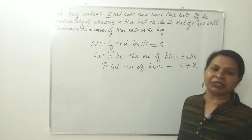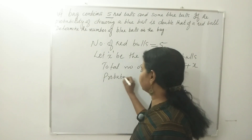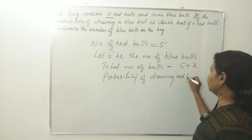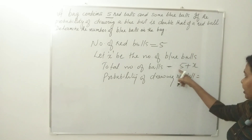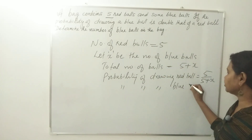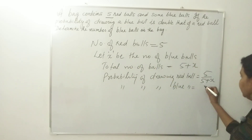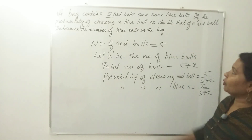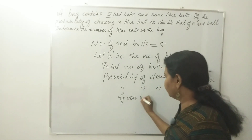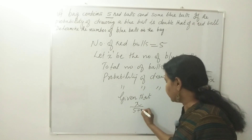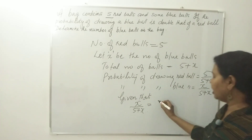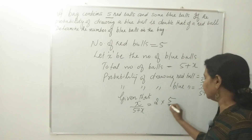This is probability — very simple, you know it. Probability of drawing a red ball is 5 divided by 5 plus X. Probability of drawing a blue ball is X divided by 5 plus X. Given that the probability of drawing a blue ball is double that of the red ball, so X divided by 5 plus X equals 2 times 5 divided by 5 plus X.